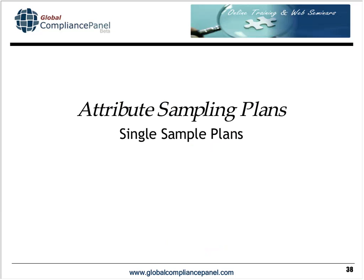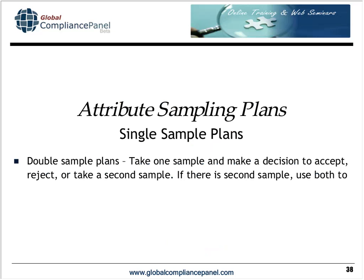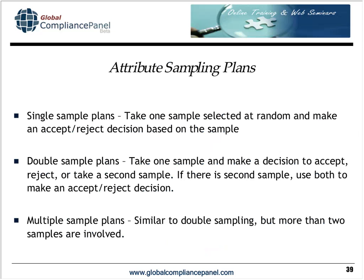In a single sampling plan, we take one sample selected at random and make an accept-reject decision. In a double sampling plan, we take one sample with three possible decisions: accept, reject, or take a second sample. At the end of the second sample we can make an accept-reject decision. In multiple sampling plans, there could be more than two samples — Z1.4 allows up to seven different samples before you must make a decision, which gets complicated.